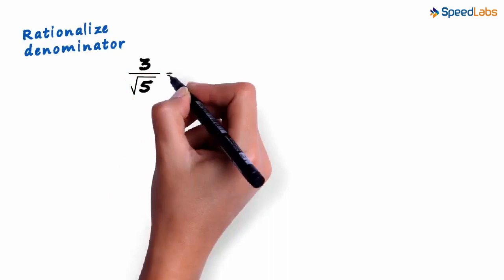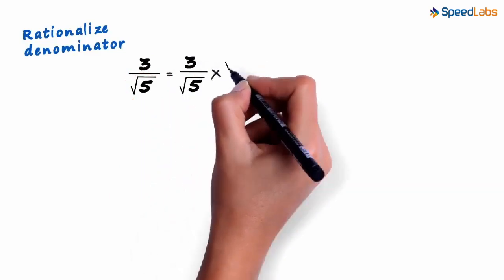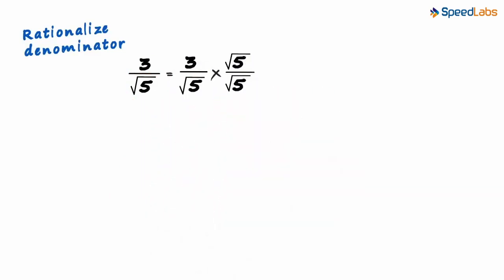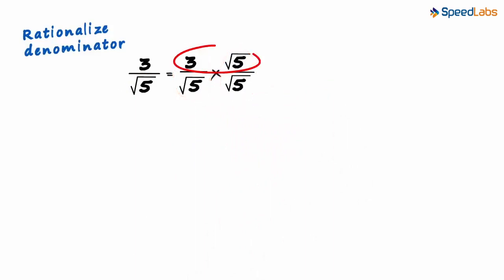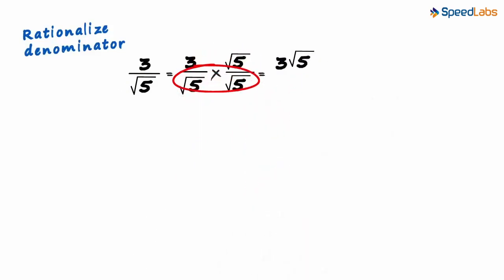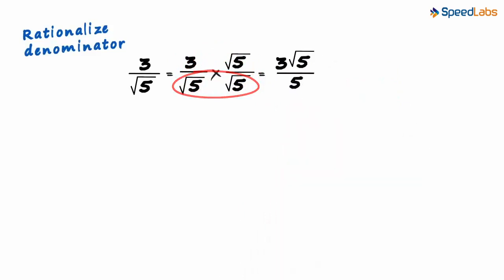We can write this as 3/√5 multiplied by √5 divided by √5. We are effectively multiplying by 1. 3 multiplied by √5 equals 3√5, and √5 multiplied by √5 equals 5. This makes the denominator rational.